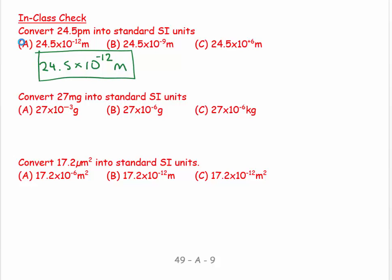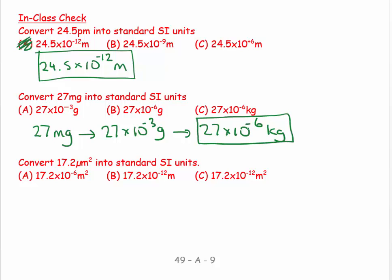For the next one, 27 milligrams equals 27 times 10 to the minus 3 grams, but because we've got to work in SI units, we want 27 times 10 to the minus 6 kilograms. So 27 times 10 to the minus 6 kilograms would be that answer. Notice: same numerical value with a wrong unit, so watch out for that.